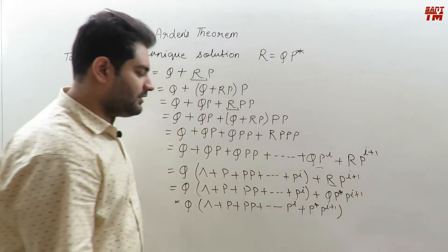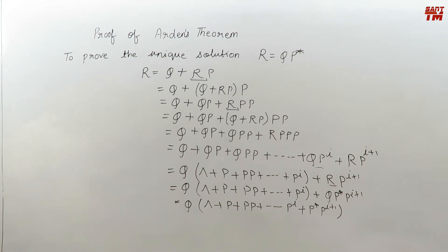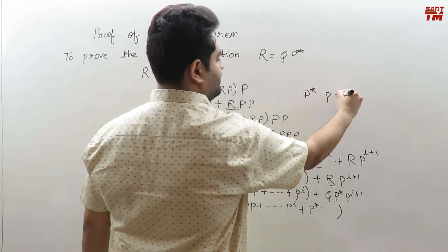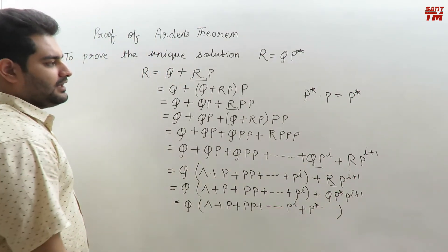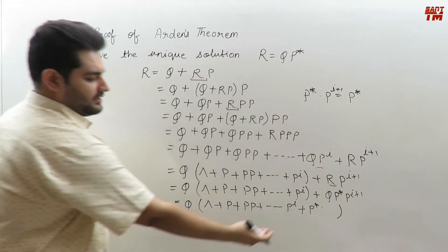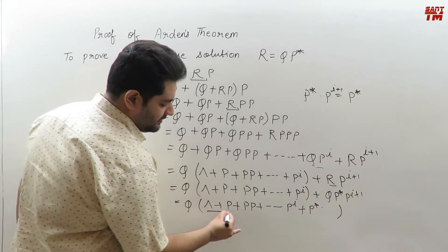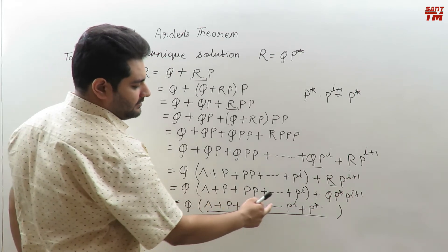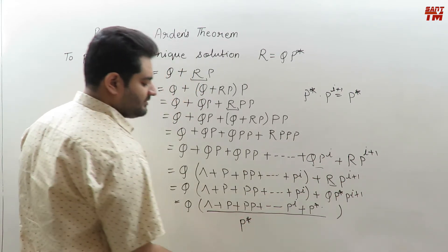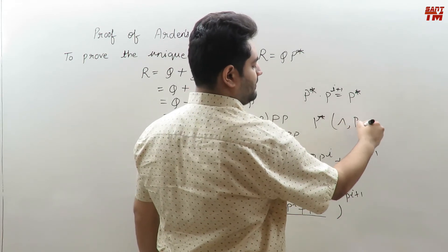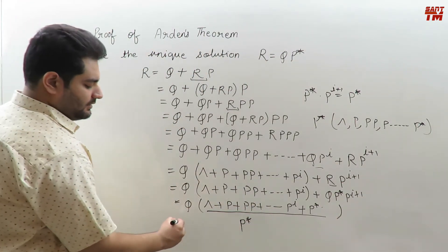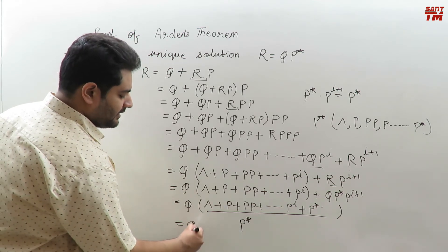Now, the term P-closure·P^(i+1) is nothing but P-closure, because anything multiplied with P-closure gives P-closure — this is the identity of regular expressions. Whether it is P, PP, P^i, or P^(i+1), it will give P-closure. Also, null + P + PP + ... up to any number of P's is precisely P-closure, since P-closure contains zero P's, one P, two P's, three P's, and any number of P's. So the whole expression is substituted with P-closure, giving QP-closure.